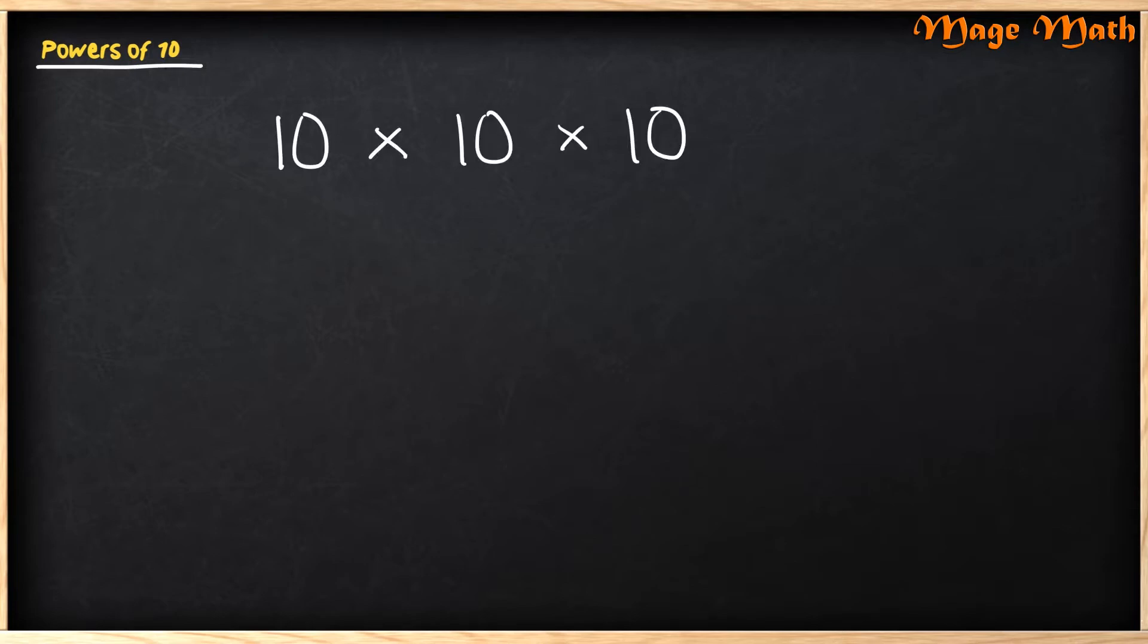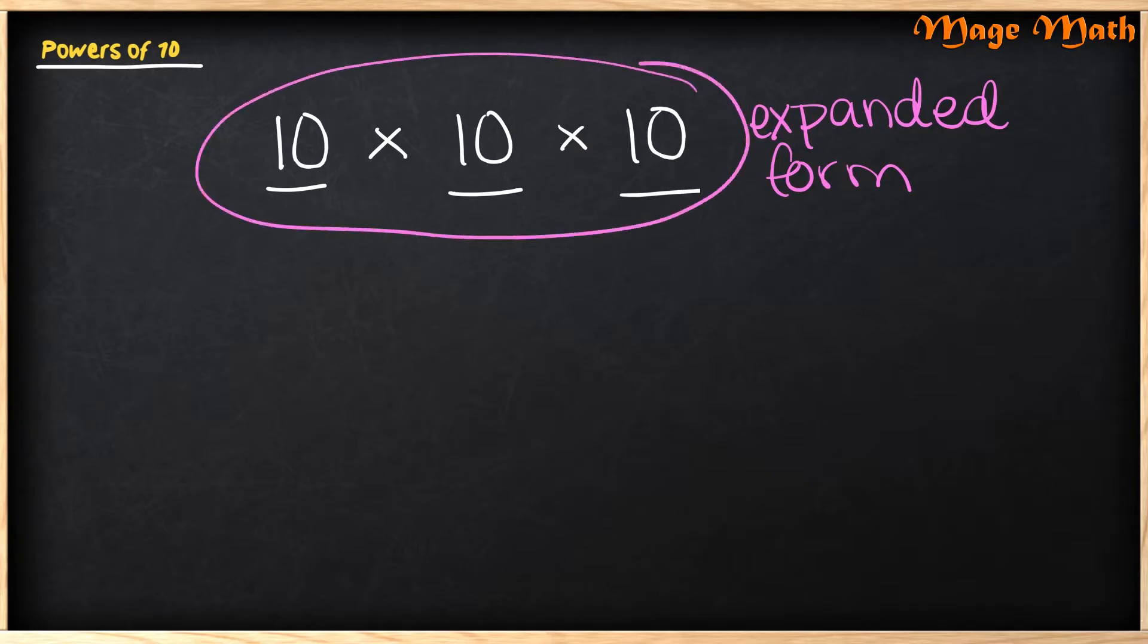Powers of 10 is just a fancy way to say 10 being multiplied by itself multiple times. If you look at the example I wrote, you see that 10 has been multiplied by itself three times. This way is known as the expanded form. There are two other ways we can also write this.